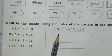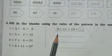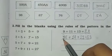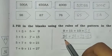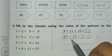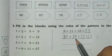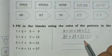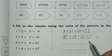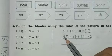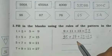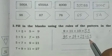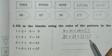तो हम यहां पर 15 से ही start करेंगे. 15 के बाद 16 छोड़के 17, 18 छोड़के 19 is equal to 51. So 15 plus 17 plus 19 is equal to 51.